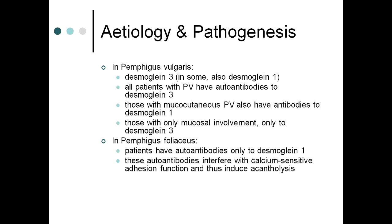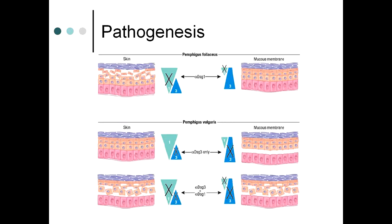Patients with mucocutaneous pemphigus vulgaris also have antibodies to desmoglein 1, whereas those with only mucosal involvement have antibodies only to desmoglein 3. In pemphigus foliaceous, patients have autoantibodies only to desmoglein 1. These autoantibodies interfere with calcium-sensitive adhesion function, inducing acantholysis.